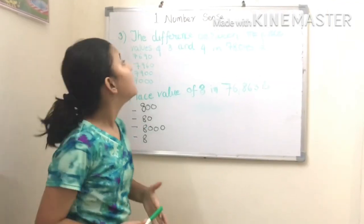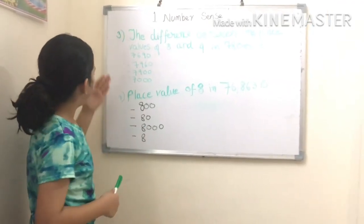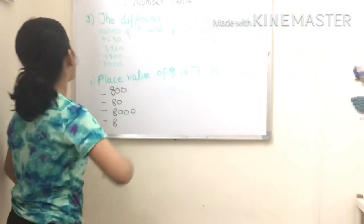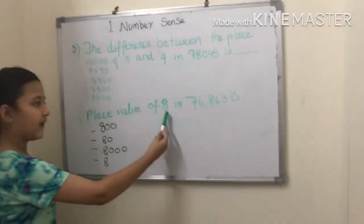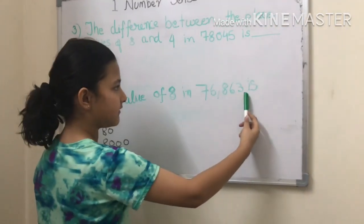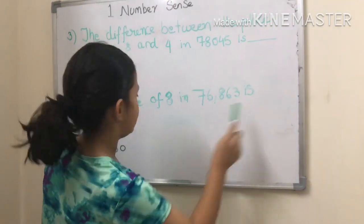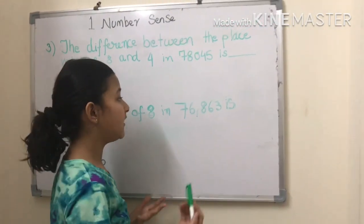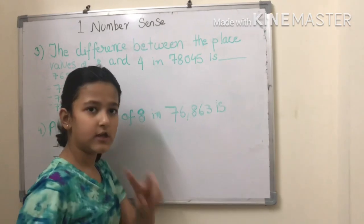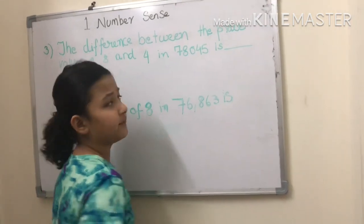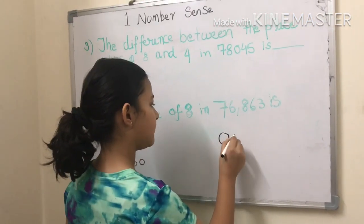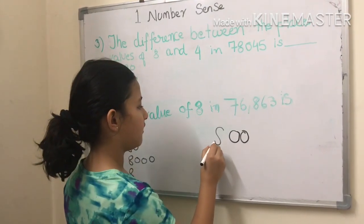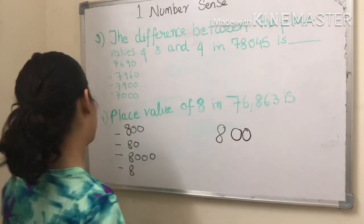So guys, I have third and fourth question. First I'll explain the fourth question: place value of eight in 7863 is... So after eight, how many numbers are there? One, two - there are two. So we will turn them into two zeros, then we will take eight. We got eight hundred. So our answer is eight hundred.